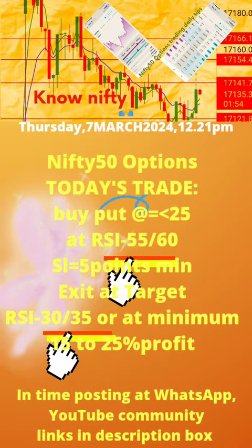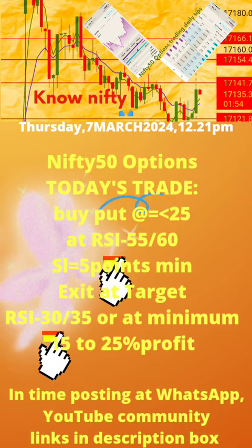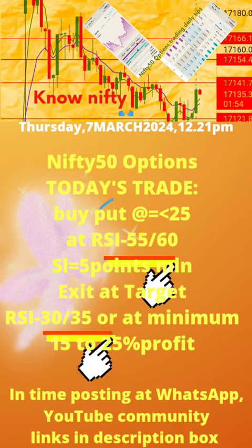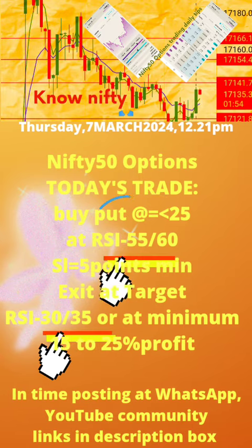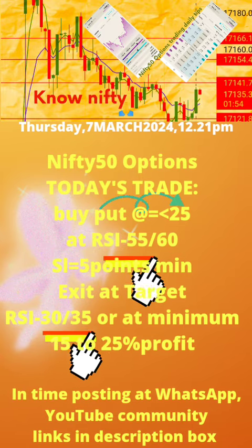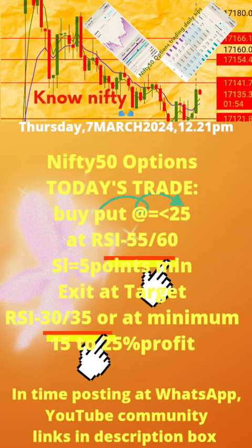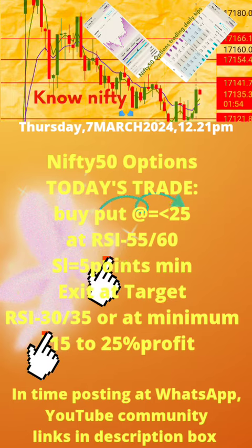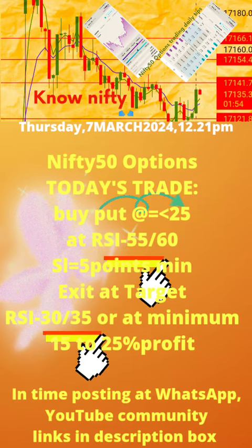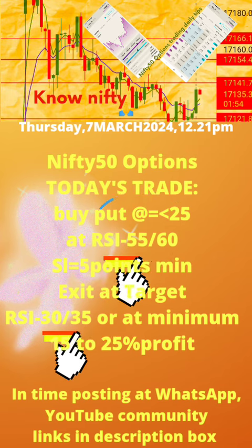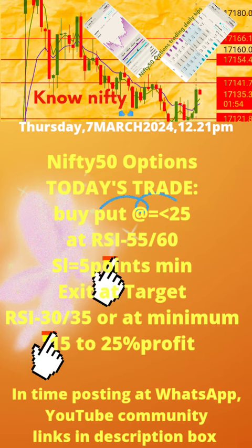Please note: 1. Today's time of post is also mentioned. 2. Buy put or call at a strike price with premium value equal to or less than 25, at RSI value updated daily. 3. Apply stop loss of minimum 5 points. 4. Exit at target RSI value updated daily. Now take today's trade as per the updates in this page.